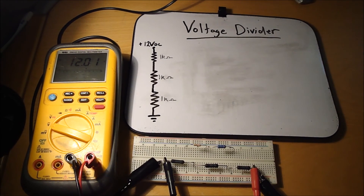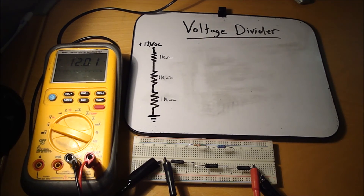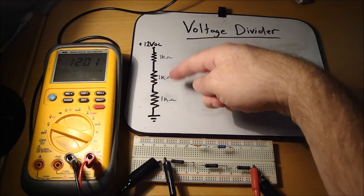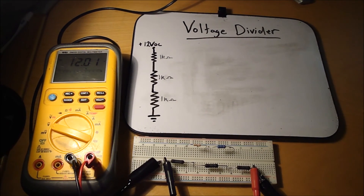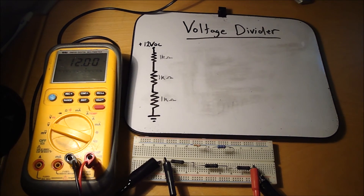Let's talk about the voltage divider circuit. A voltage divider is basically two or more resistors in series that divide up the voltage.